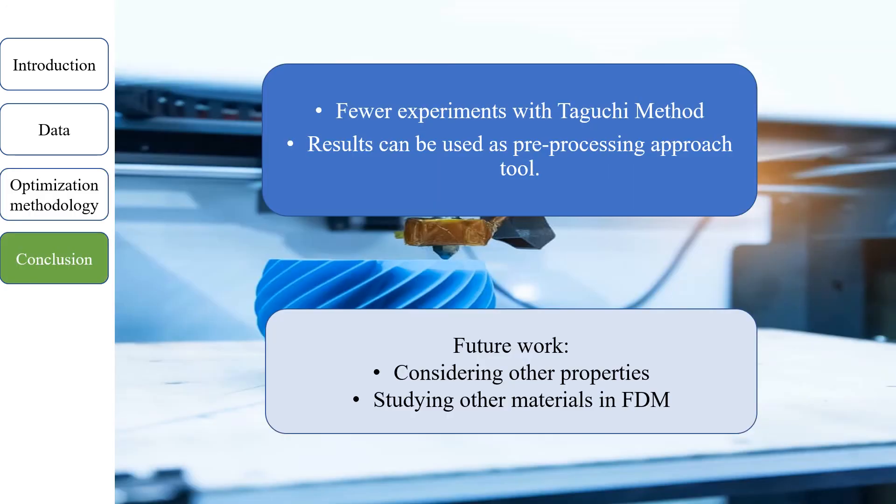In this work, we showed that we can achieve valuable results with less experiments by means of Taguchi method and design of experiments. We used fewer experiments but more valuable results and conclusions. It helps us to save time and cost. Moreover, we showed that if there is conflicting results, we can use metaheuristics to help decision makers in choosing proper levels. Thanks for your attention.